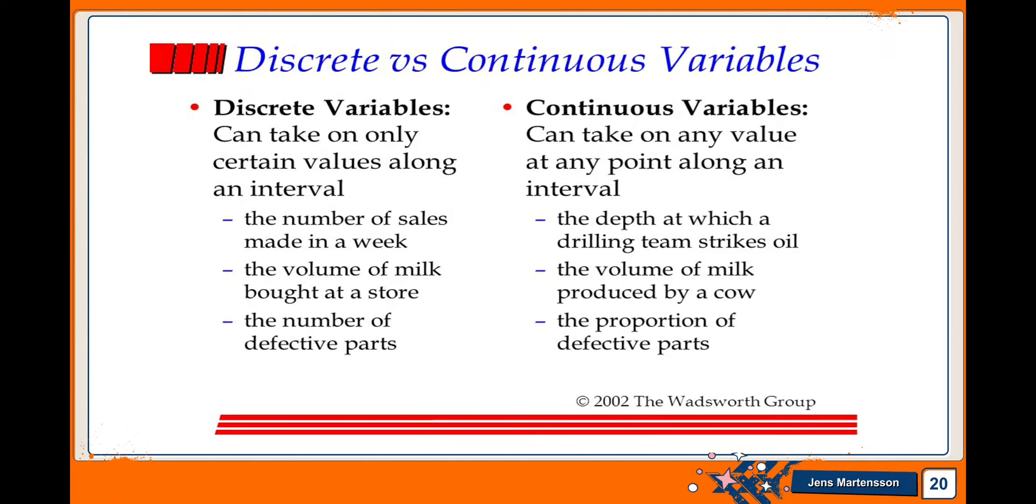And for discrete variable is the number of defective parts. We can give or we can count the number of defective parts. While in continuous variable, the proportion of defective parts is between the interval, because that is a proportion of defective, so that is a continuous variable.